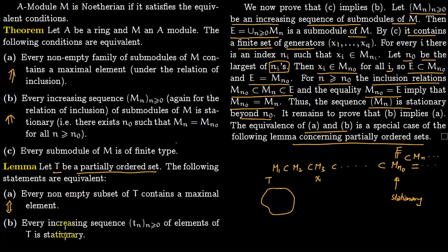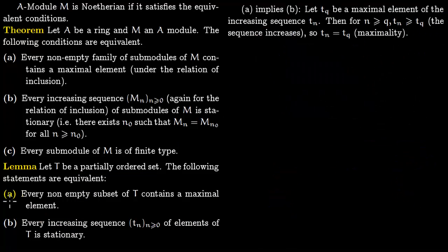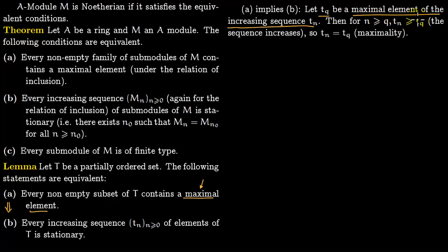The proof of A implies B uses the axiom of choice and is straightforward. If T_Q is the maximal element of an increasing sequence T_n, then for n ≥ Q we have T_n ≥ T_Q, but since T_Q is maximal, T_n = T_Q. So the sequence becomes stationary at the maximal element.